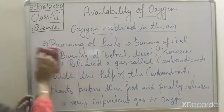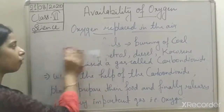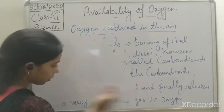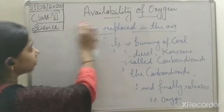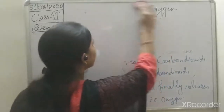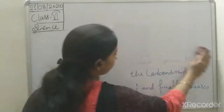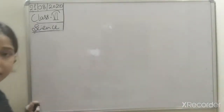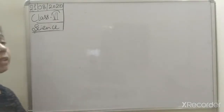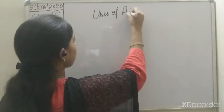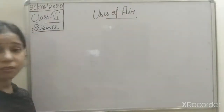We have discussed a lot about air — the composition of air including nitrogen, carbon dioxide, water vapor, smoke, and dust particles. Now we will discuss the different uses of air.